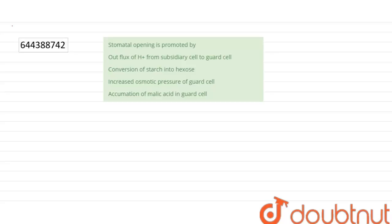The question says that stomatal opening is promoted by: outflux of H+ from subsidiary cell to guard cell, conversion of starch into hexose, increased osmotic pressure of guard cell, or accumulation of malic acid in guard cell. Stomata open and close due to water and ion movement.